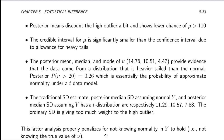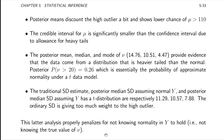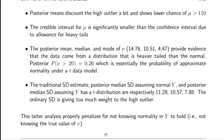You don't get the right frequentist operating characteristics when you try to make a decision about normality from the data and then pretend your decision is infallible. The Bayesian approach is totally different: it says we don't know whether the data are normal or not, but whether it is or not, we don't really care because we can get valid inference in either case.